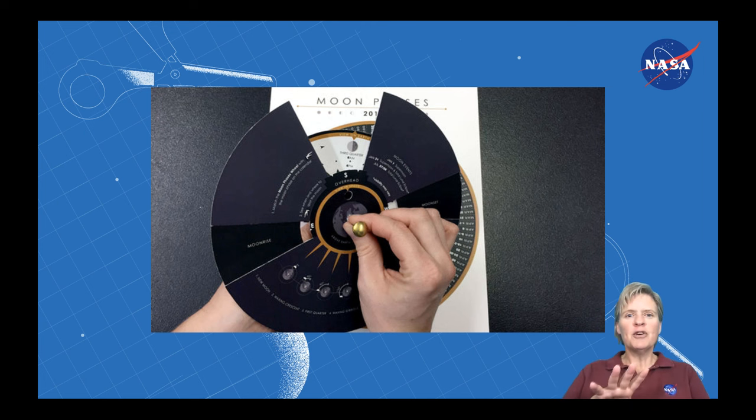The viewing wheel, which looks a little bit like a fan, a dark fan, goes on top. Then the moon phase page that you already colored in and then you're going to set those on top of the rectangular page that you didn't cut. Line up all the holes that you poked as a guide hole and put your brass fastener through those holes and then spread the wings on the other side.